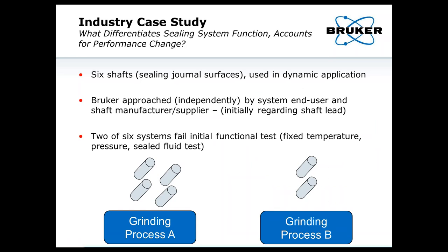The next part of the discussion covers a case study where a problem was presented to our group here in Bruker, both from an end user and also a supplier of some shaft surfaces. They did this independently, so the end user and the supplier each got in contact with Bruker and were trying to understand some differences in performance. It's not a trivial problem, and I'll explain more about why this was complicated to understand.